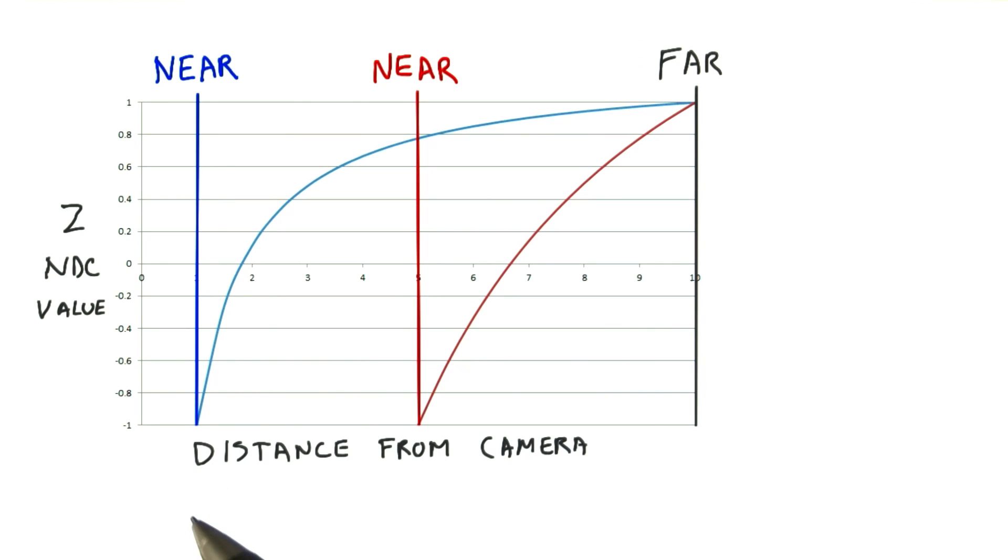The z-depth range of values is spread between the near and far distances. It's clear that having these two distances close together directly benefits precision. However, with the perspective transform in particular, you want to move the near plane as far from the eye as possible.